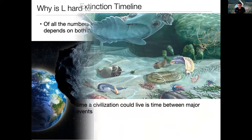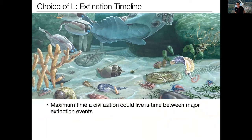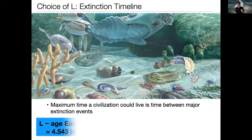The longest choice of L you can imagine making is based on the timeline of extinctions on Earth. If we take Earth as an example and assume similar extinction events could happen on any world, we took the age of the Earth and divided it by the number of extinctions the planet has seen — that gave us something like 900 million years for the maximum life a civilization could extend. If I look at the dinosaurs, that's about right: they lived 170 million years before the KT extinction event erased them.